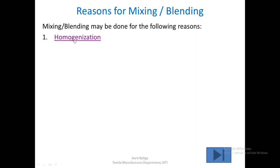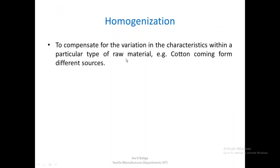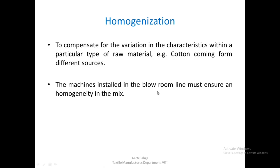The first reason is homogenization. Raw material, whether natural or manmade, comes in an inhomogeneous form. For natural fibers, variation is due to cultivation conditions which we cannot control; for manmade fibers, variation arises from production differences. To compensate for this variation within a particular fiber type — for example, cotton coming from different sources — homogenization is required. The machines installed in the blowroom line must ensure homogeneity in the mix.